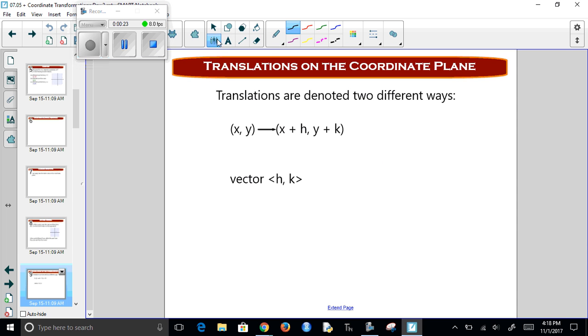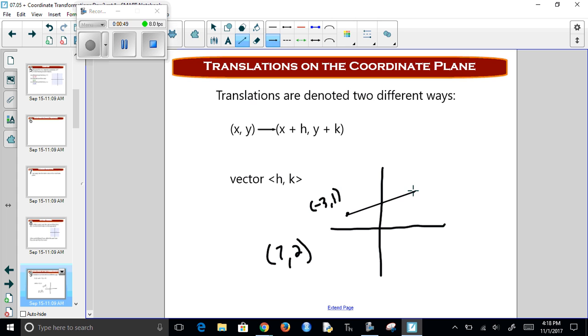Now that might not make much sense. So if I have my coordinates, and I have this point right here, let's say it's (-3, 1). Now if I move it by a vector, say my vector is <7, 2>, that means I'm going to start at this point and move to the right 7 and up 2.